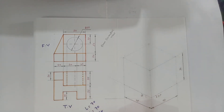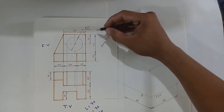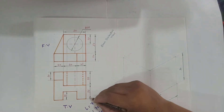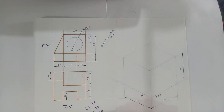The height will be 20 plus 50, so height equals 70 mm. The width is 35 plus 35, so width is also equal to 70 mm. Now first of all, let us draw the isometric view of a cube having length, width, and height all equal to 70 mm.